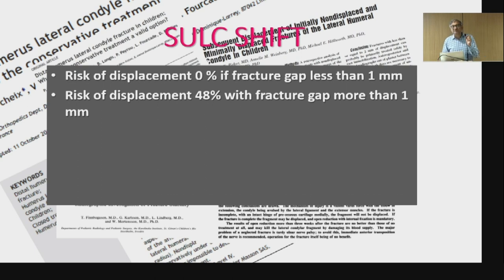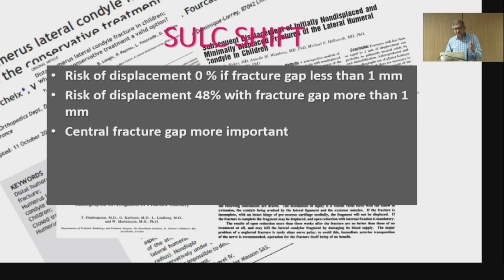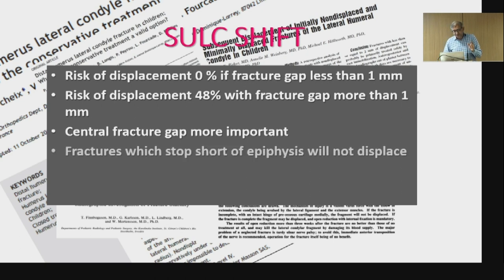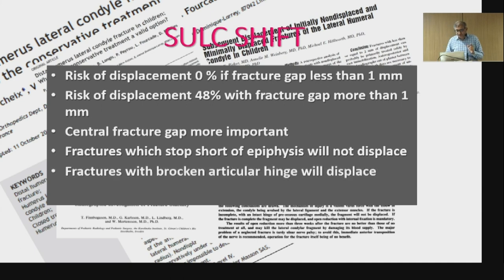If the fracture gap is more than one mm — more than one cortex width of the humerus — the rate of displacement is 50%. So if the fracture gap is less than one mm, you will conserve; if it's more than one mm, then in 50% of cases you may have to fix. Further refinement shows that the central gap is more important than the lateral gap. If the lateral gap is more and the central gap is less, it means it's a converging fracture, likely not reaching the articular surface. If the central gap equals the lateral gap, it is more likely reaching the articular surface and will require fixation. Fractures which stop short of the physis will not displace; fractures with a broken articular hinge — where the central gap is greater than or equal to the lateral gap — are more likely to displace.